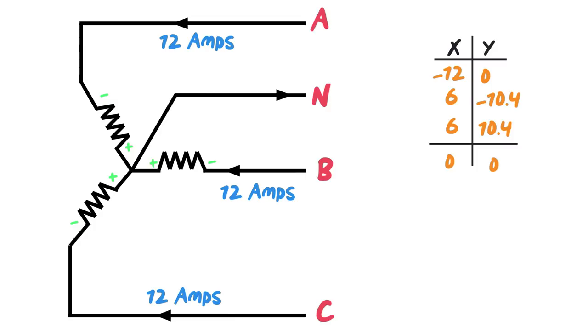So we add all those up and negative 12 plus positive 6 plus positive 6 is 0, and 0 plus negative 10.4 plus 10.4 gives you 0. So that's determining what our current is. We've got a 0 on the X and a 0 on the Y, and I don't think you need to be a mathematician to determine that the resultant of this is going to be 0 amps.